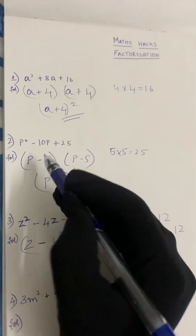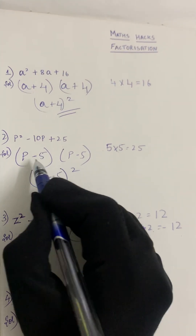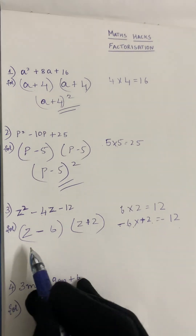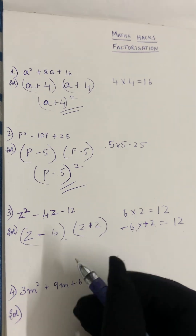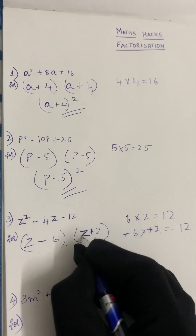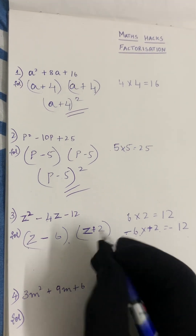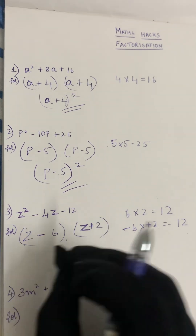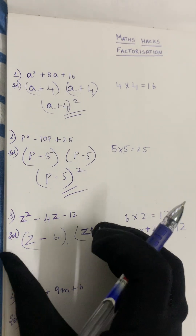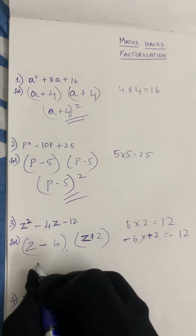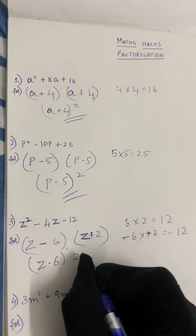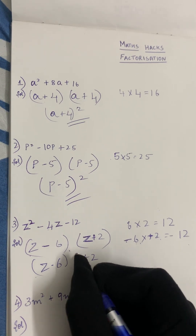In this sum we have z minus 6 and z plus 2 — they are different, so we can't write them as a square. In the previous sums we had p minus 5 and p minus 5, and a plus 4 and a plus 4, which were the same. Here they are different, so our answer is z minus 6 into z plus 2.